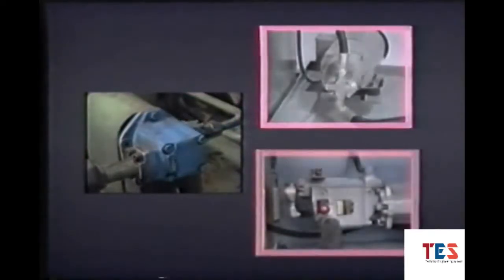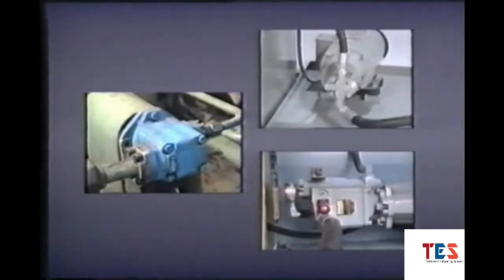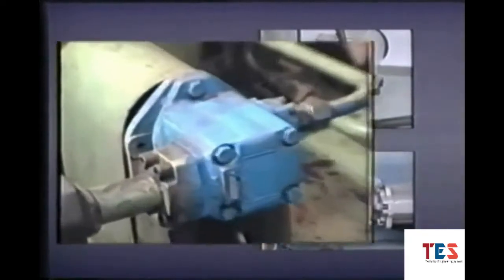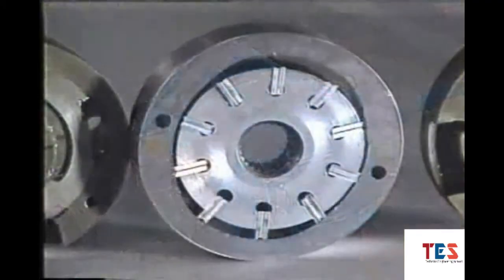Three kinds of positive displacement pumps are commonly used in industrial hydraulic systems: the vane pump, the gear pump, and the piston pump. We'll examine how each one works and discuss how horsepower can be changed to match the work being done, thereby increasing the efficiency of the system.